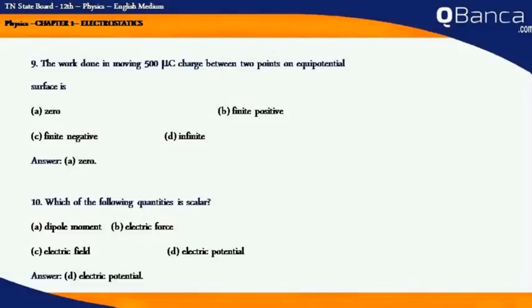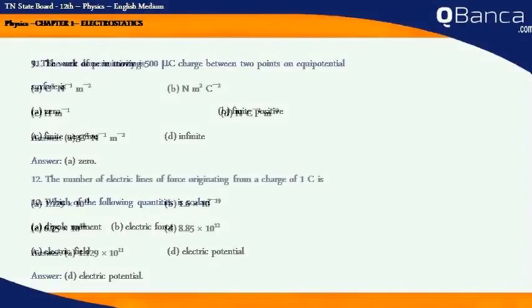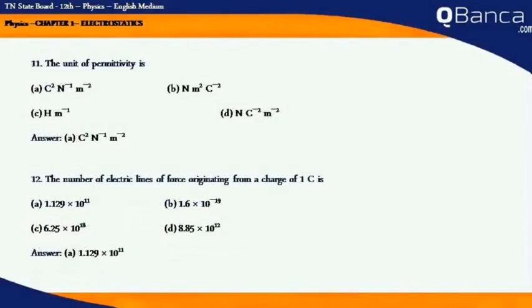Which of the following quantities is scalar? Answer: Electric potential. The unit of permittivity is. Answer: C² by N·m².